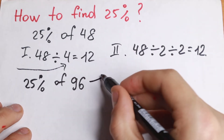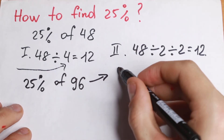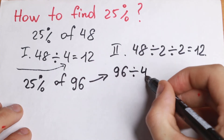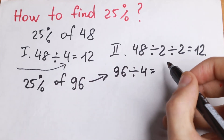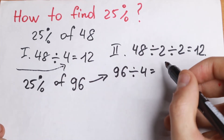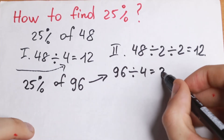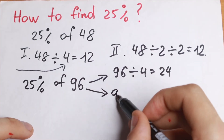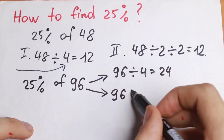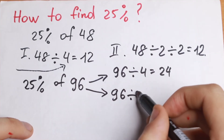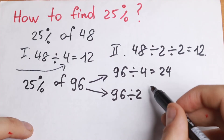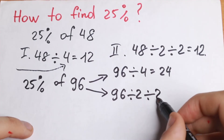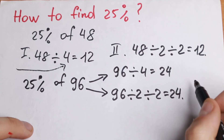If you divide 96 by 4, we will have our answer: 24. Or if it's hard for you, you can divide it two times. Dividing by 2 we will have 48, and dividing by 2 again we will have 24.